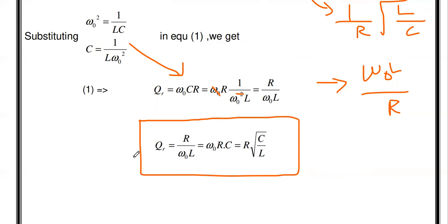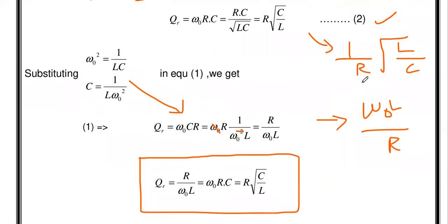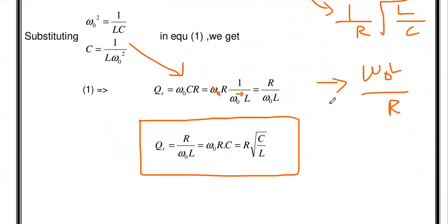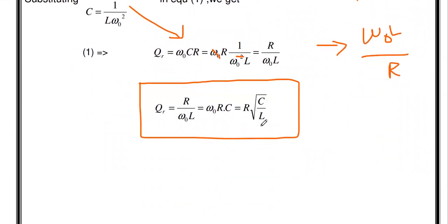For the series RLC circuit, the quality factor formulas are the inverse of each: ω₀L/R, 1/(ω₀RC), and (1/R)√(L/C). We already discussed this in the previous video. If you want to watch the quality factor of the series RLC circuit, I will give the link in the description box.